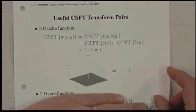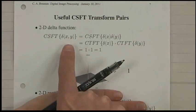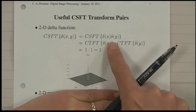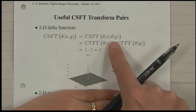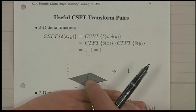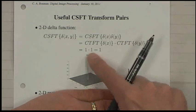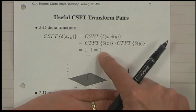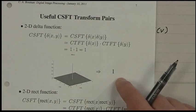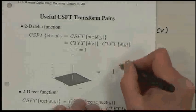The continuous space Fourier transform of a 2D delta is a continuous space Fourier transform of the product of a delta in X and delta in Y. A 2D delta is just a delta that has a volume of 1 instead of area of 1. If you take the continuous time Fourier transform of each individual component, you get 1, and 1 times 1 is 1. For this particular case, plotting this Fourier transform was tricky because it's hard to plot a 2D function which is constant — so I just wrote 1.